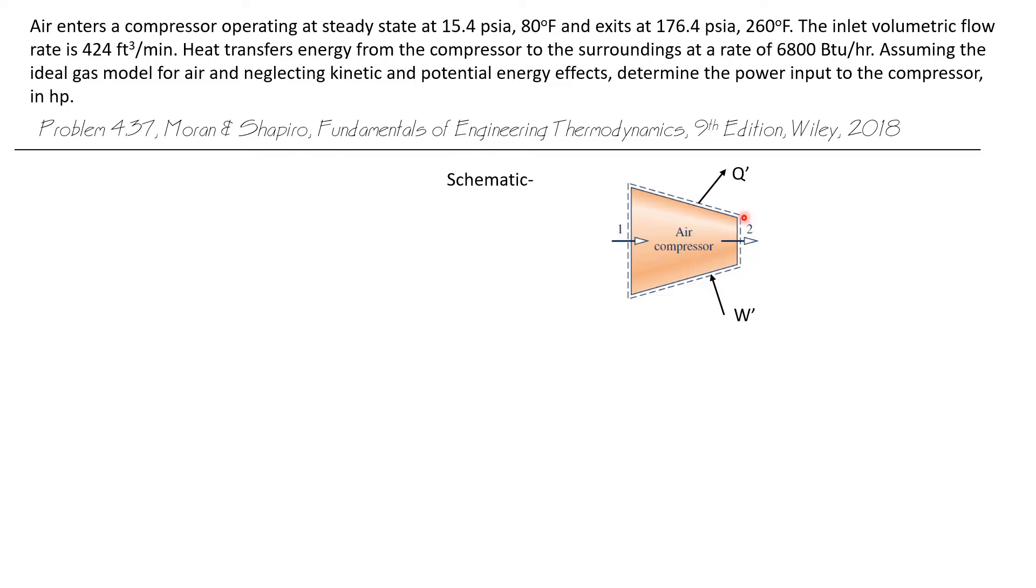Let's lay out our storyboard for this problem. We'll start with the schematic. We'll define the system to be the air flowing through the turbine between inlet state 1 and exit state 2. There's heat transfer from the compressor to the surroundings, and the compressor requires work being put into it in order for the compression process to take place.